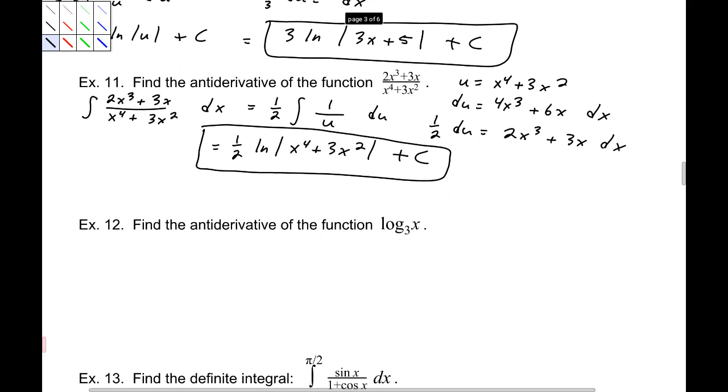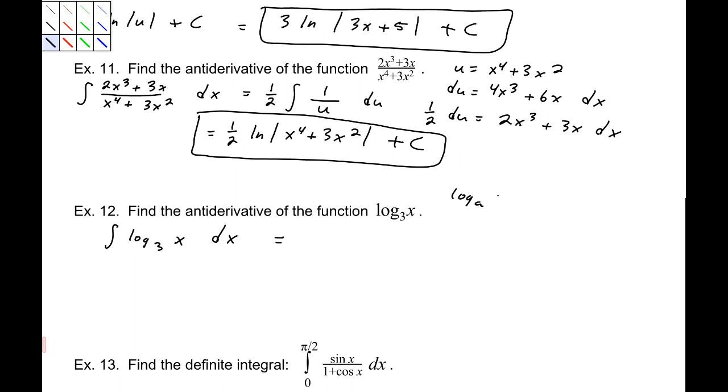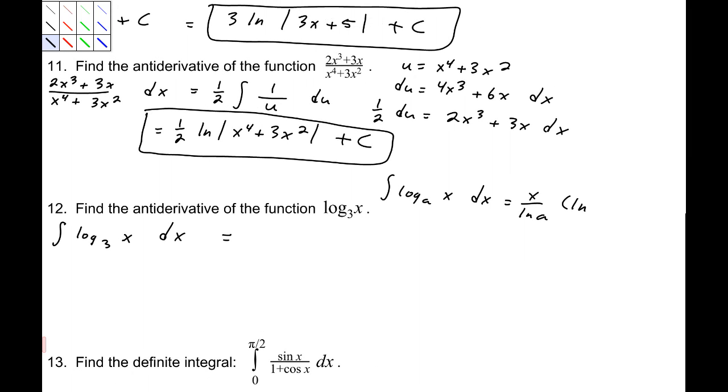Find the antiderivative of the function log base 3 of x. So, log base 3x dx. Now, we had a formula, right, I guess that's what you would call it, a formula at the top of our paper there, that's log base ax equals, log base ax, the integral of that dx, equals x over natural log a times natural log of x minus 1 plus c.